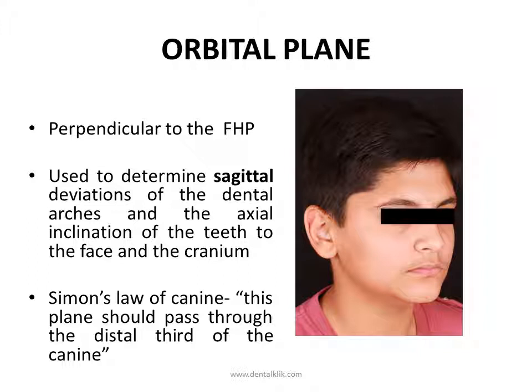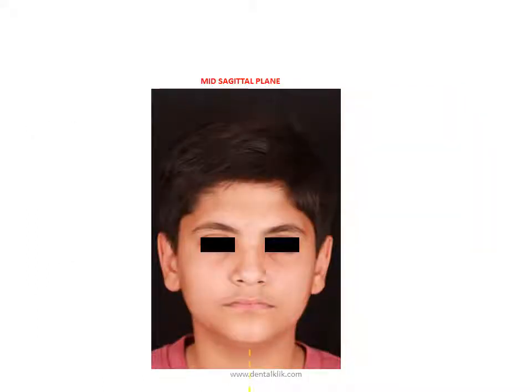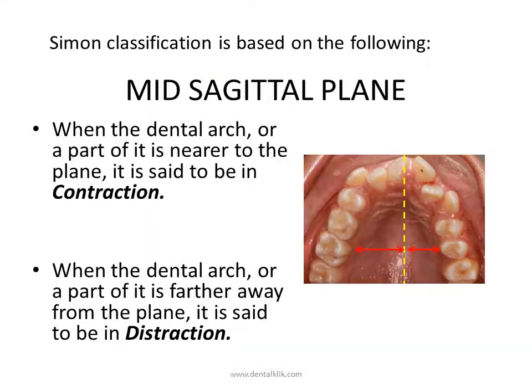The orbital plane is perpendicular to the eye-ear plane at the margin of the bony orbit directly under the pupil of the eye. This plane is used to determine sagittal deviations of the dental arches and also the axial inclination of the teeth to the face and cranium.